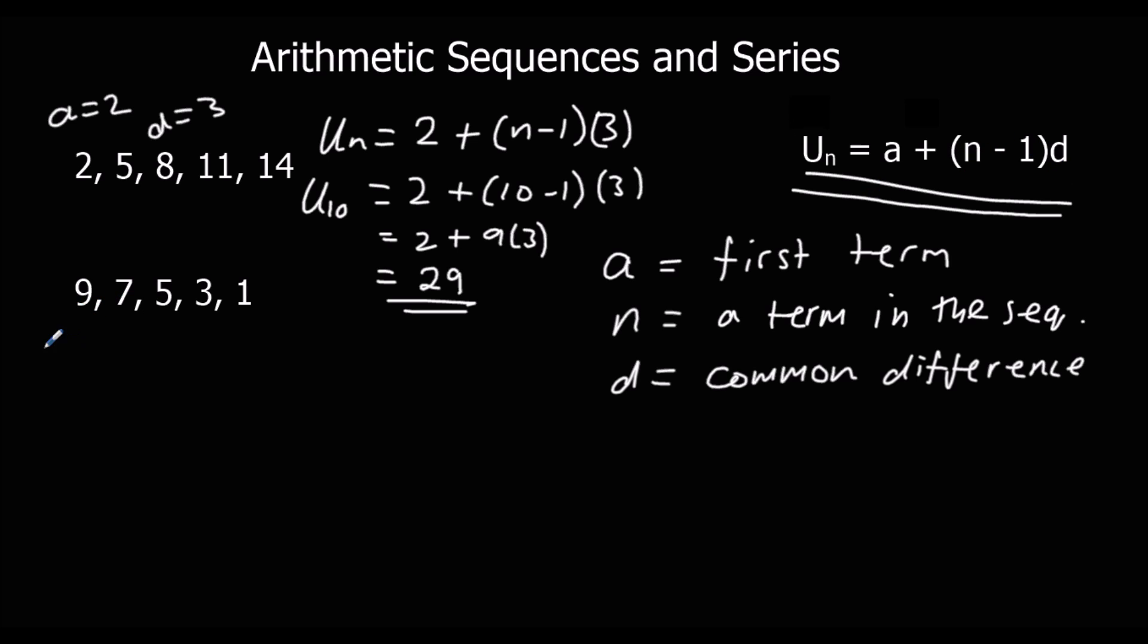Again here, we've got a is 9, and this time the common difference is minus 2. For this sequence, un is 9, plus n minus 1, times minus 2.